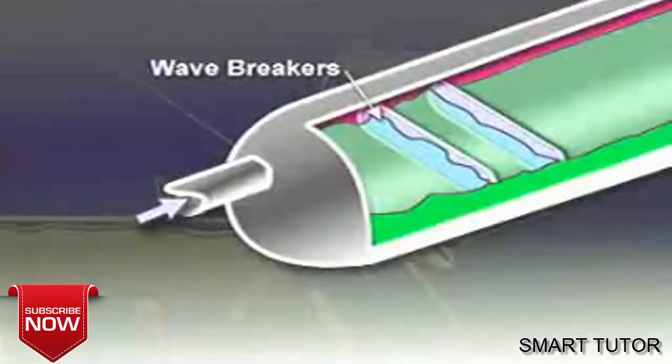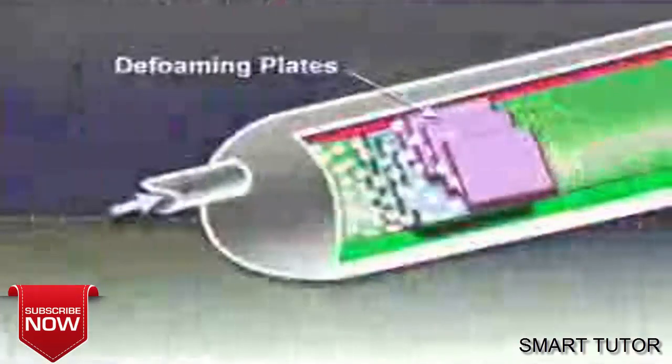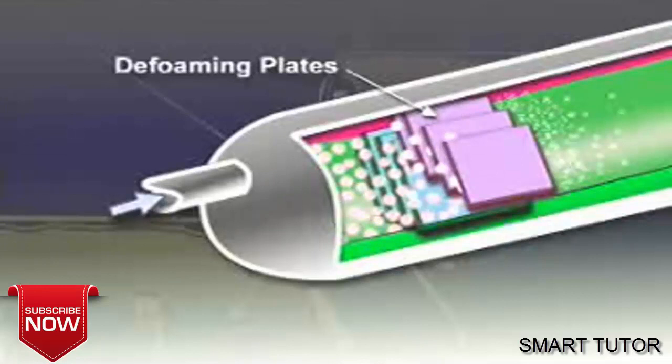Wave breakers limit the wave propagation that might otherwise occur in large horizontal vessels. Defoaming plates reduce foaming at the gas-liquid interface which tends to occur when gas bubbles are liberated from the liquid.